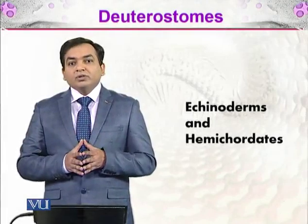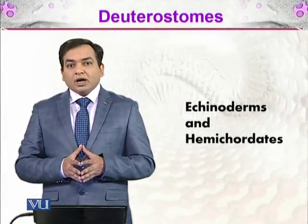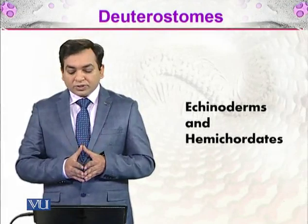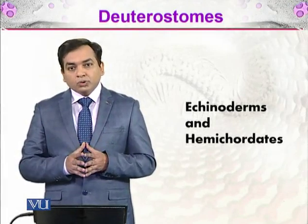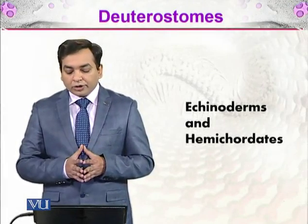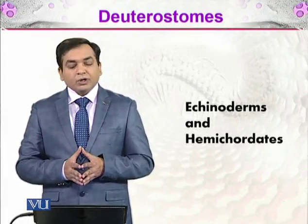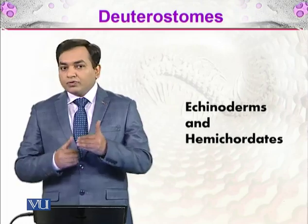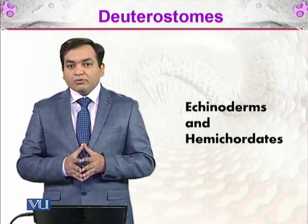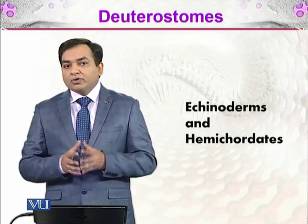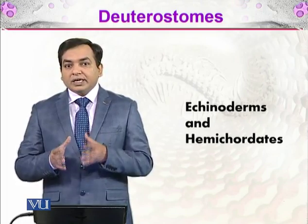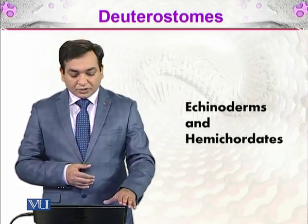In this topic, we will be discussing the deuterostomes. There are two groups: the echinoderms and hemichordates. We will be introducing these one by one and then discussing them in later topics.